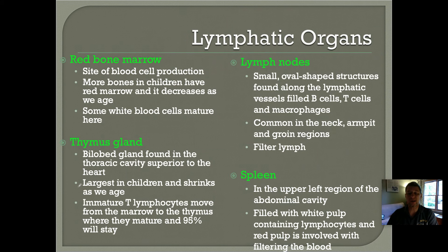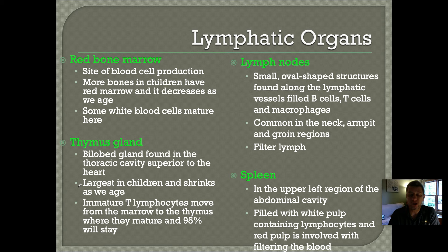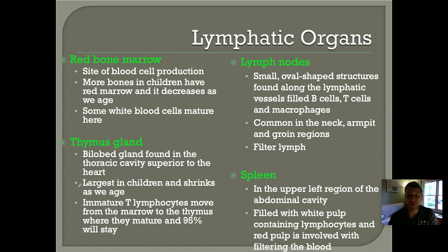Last but not least, you have the spleen, which is found in the upper left-hand region of your abdominal cavity, just under the ribs. It is filled with a substance called white pulp, which is filled with lymphocytes. There's another aspect of the spleen involved in filtering the blood, but it's really the white pulp that we're interested in today.